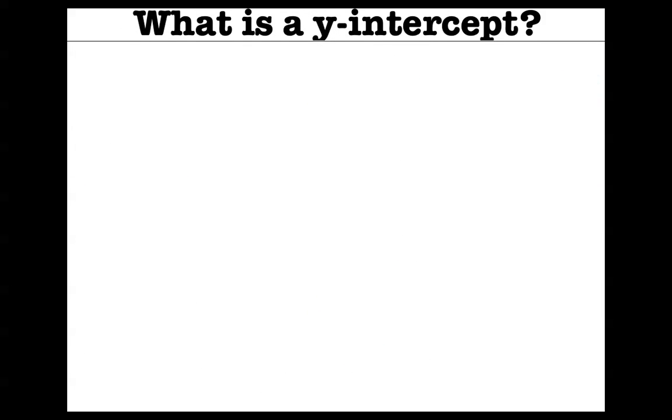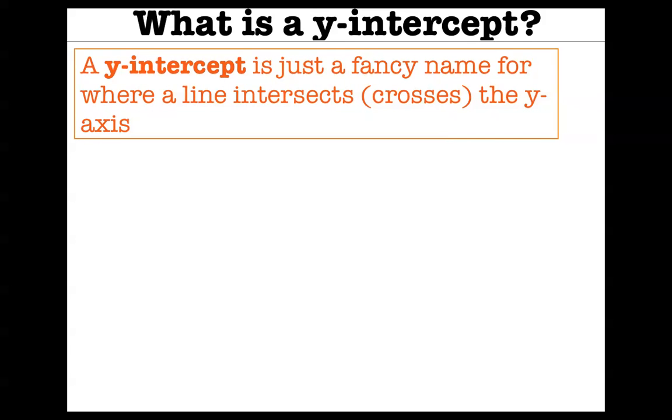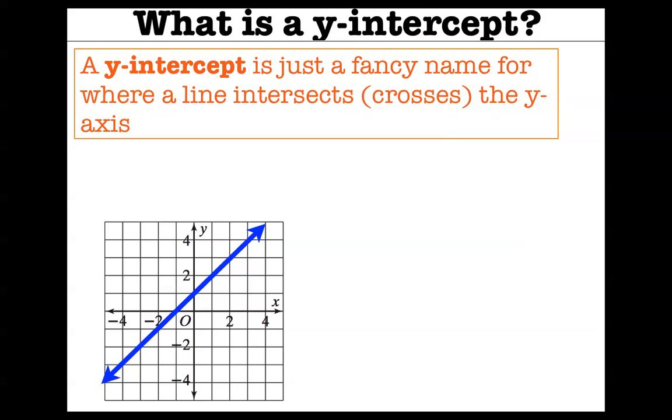Alright, we got a new concept though, and this new concept is the idea of a y-intercept. Every line has one. Well, just about every line has one. So, a y-intercept is just a fancy name for where a line intersects the y-axis. We all know what the y-axis is. And every line, just about, is going to cross the y-axis somewhere. So, if you look at this line, you can see it crosses the y-axis right there. That's the y-intercept of this line. And we give it a number. This line has a y-intercept of one, because it crosses the y-axis at one. Notice, it's not at zero, it's not at two, it's right in between them. The y-intercept of this line is at one.